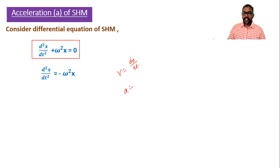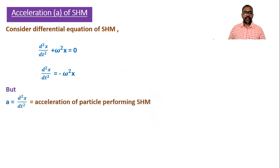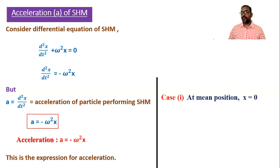Velocity is dx/dt and acceleration is dv/dt. If we substitute v = dx/dt in the acceleration formula, we get d²x/dt² as the formula for acceleration. Instead of that term, we can substitute acceleration, so we get the final formula for acceleration: a = −ω²x.